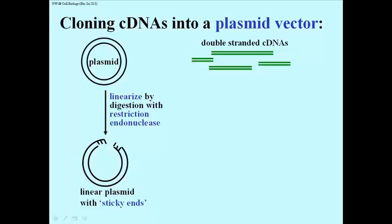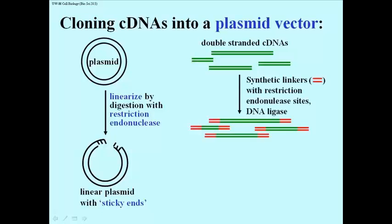Now I've got these cDNAs and I don't really want to cut those, but I do want them to have sticky ends. So what I do is I synthetically produce what's called a linker, which has the same sequence of bases that would be recognized by the restriction enzyme I intend to use.